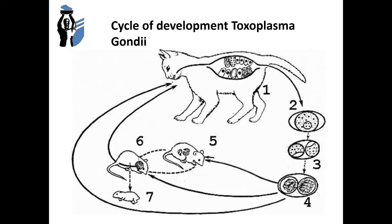The intermediate hosts are rodents, humans, and other mammals. In the intermediate host body, the extra-intestinal tissue stage occurs only. Humans can be infected from definitive hosts as well as intermediate hosts. There are three options of human infection: directly from the cat by oocyst in case of non-compliance with rules of personal hygiene; alimentary, when eating raw meat, raw chicken eggs, or unboiled milk; and transplacental, from mother to embryo.